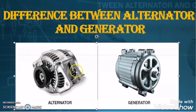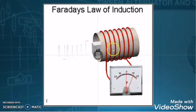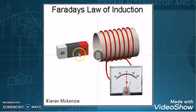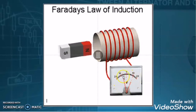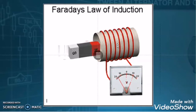Let us first understand the working principle of alternator and generator — that is Faraday's law of electromagnetic induction — in order to better understand the difference between them. A British scientist Faraday observed in his experiment that when there is a relative motion between the magnet and the coil — either the magnet is moving with respect to the coil or the coil is moving with respect to the magnet — then there is an induced EMF in the coil, and if the coil is making a closed loop then there will be an induced current in the coil.